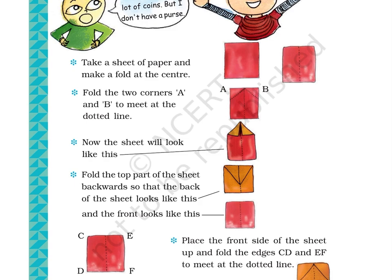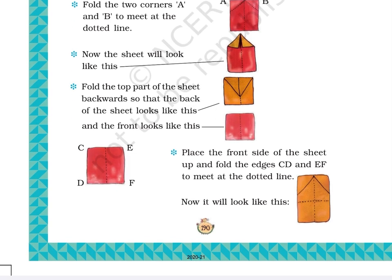Step 3: Now the sheet will look like this. The picture at the right-hand side shows the corners A and B of the paper folded to join the dotted vertical line. As a result, two triangles can be seen at the top of the paper.